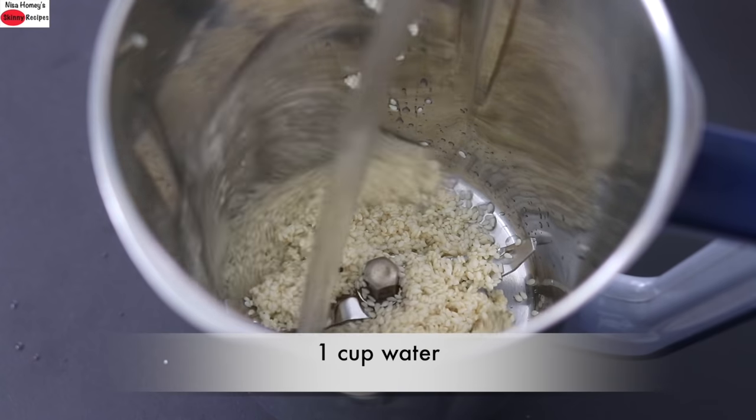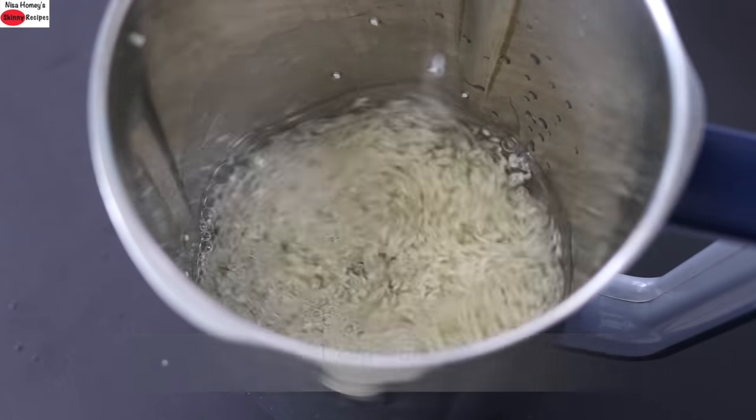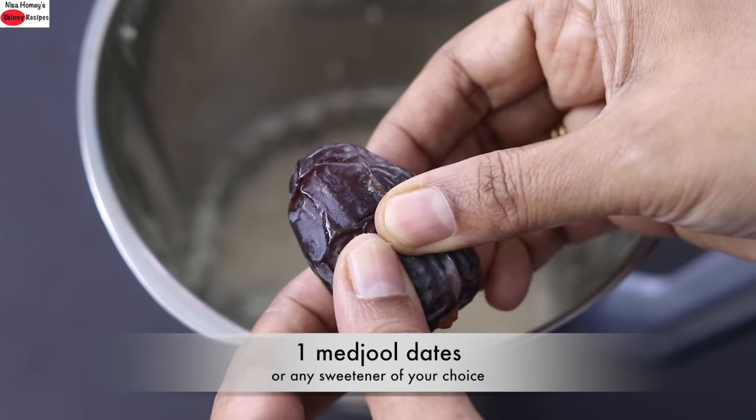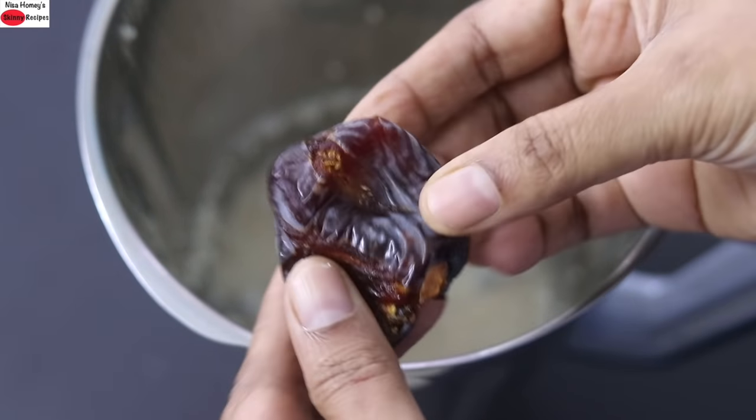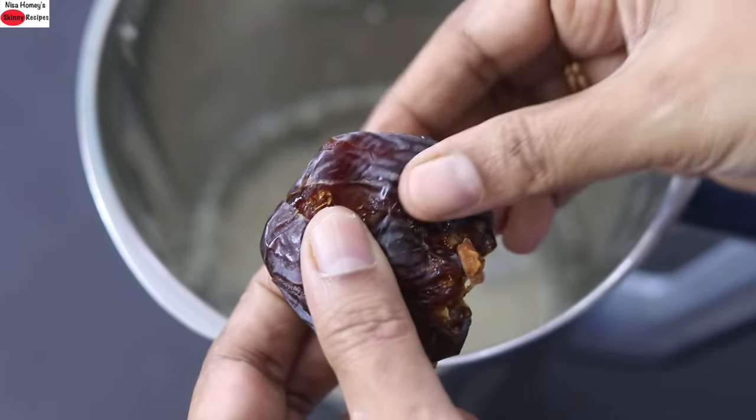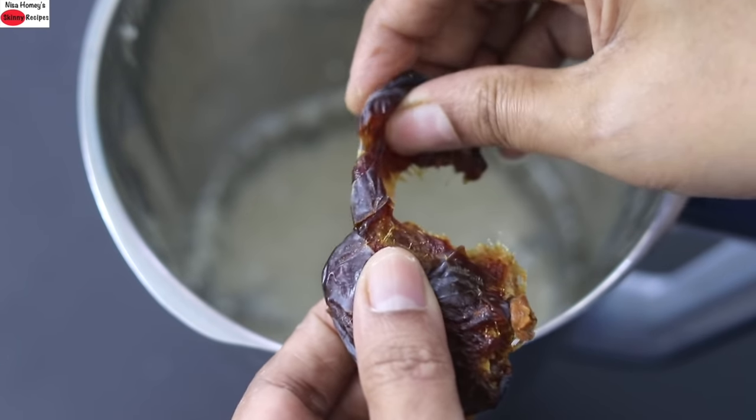Into it, I'm adding one glass or one cup of water. Adding in one date. I'm using medjool dates. Medjool dates are soft, hence I prefer to use them, and because it is soft, it is easy to blend.